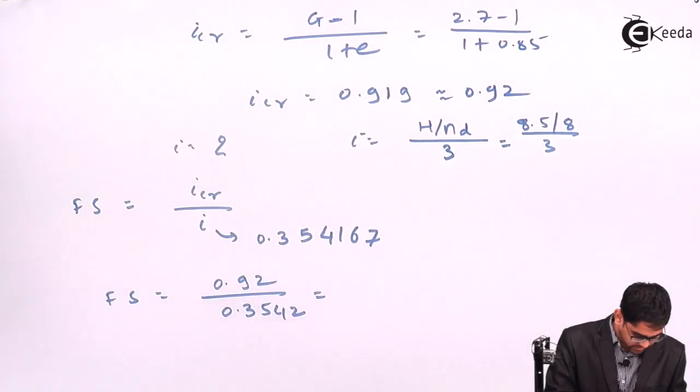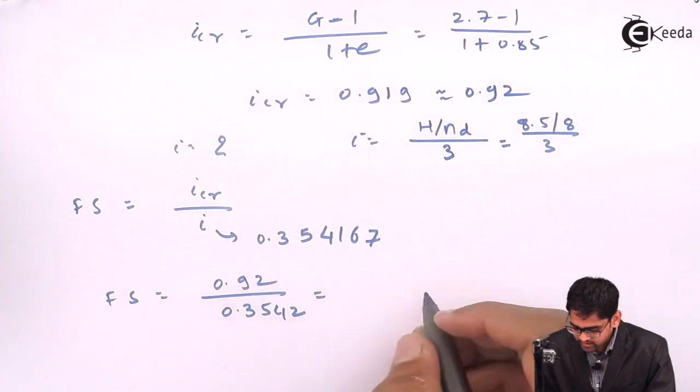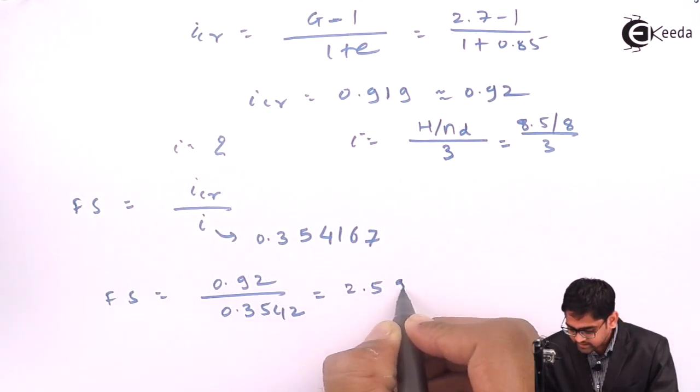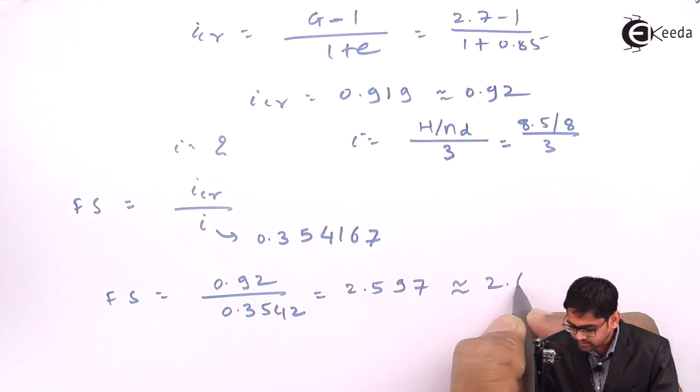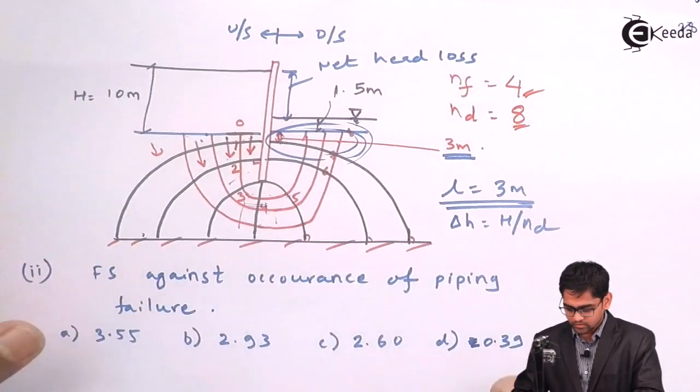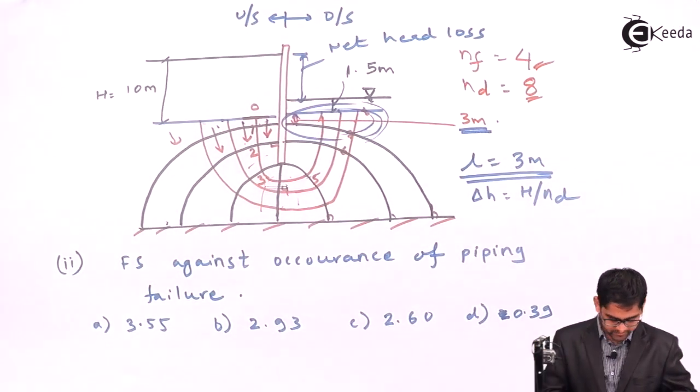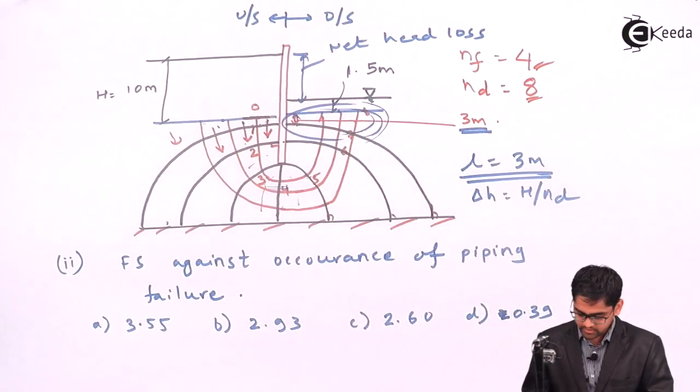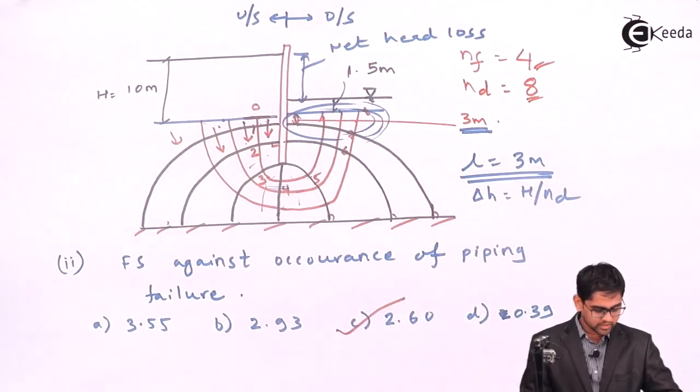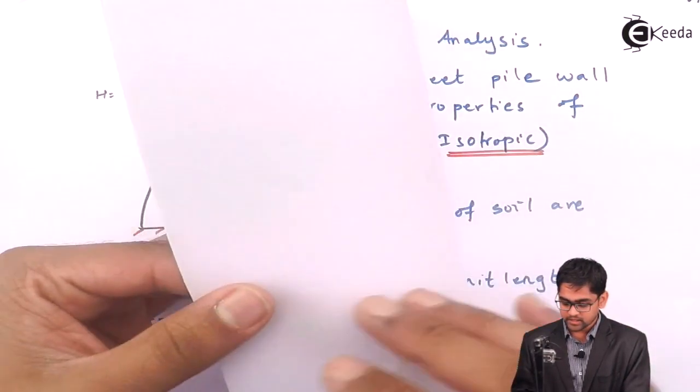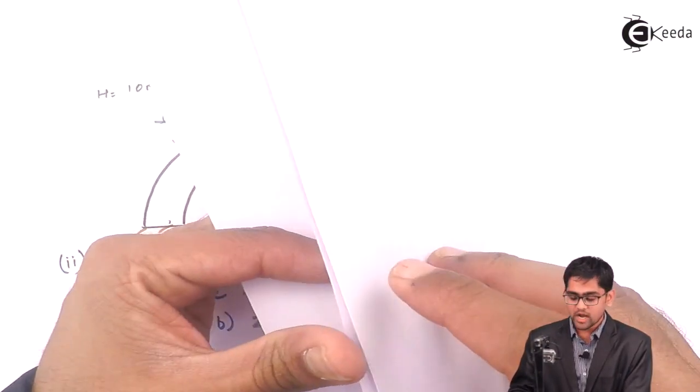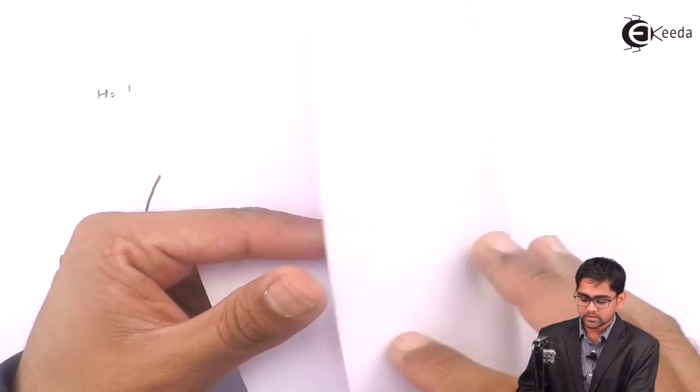Therefore, factor of safety will become 0.92 divided by 0.3542. You will get answer as 2.597, nothing but 2.6. This is the answer. If you look at the option, option C is matching 2.6. This finishes the first problem in the seepage analysis. We will move ahead with another two problems in the next module. Thank you.